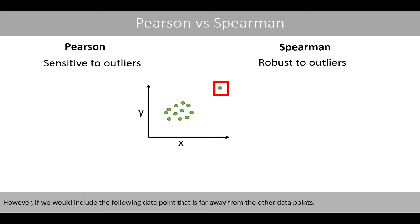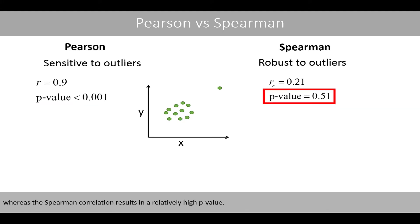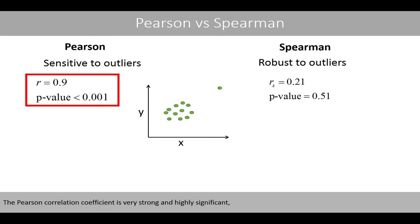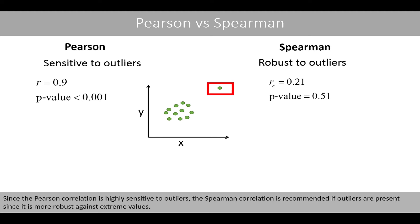However, if we would include a data point that is far away from the other data points, the Pearson correlation now results in a very low p-value, whereas the Spearman correlation results in a relatively high p-value. The two methods therefore show completely different results: the Pearson correlation coefficient is very strong and highly significant, whereas the Spearman correlation coefficient is weak and non-significant. Since the Pearson correlation is highly sensitive to outliers, the Spearman correlation is recommended if outliers are present, since it is more robust against extreme values.